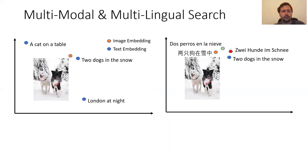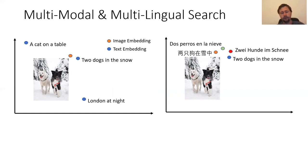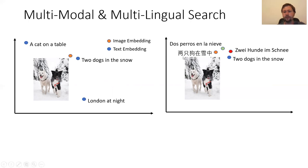It's not limited to text. You can also embed images and text in the same vector space. Here you have an image and the text 'two dogs in the snow,' and you can search — when you enter this text, this image will show up. It's also not limited to English or one language. You can have a text encoder for many languages — English, German, Italian, Spanish, Chinese — and when you input 'two dogs in the snow,' it will show you the picture.